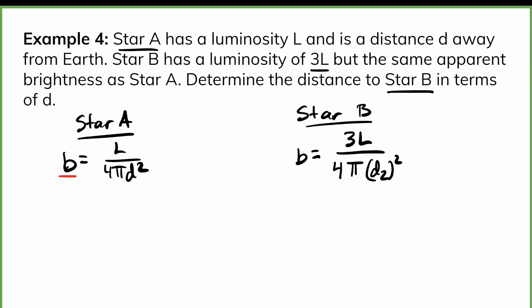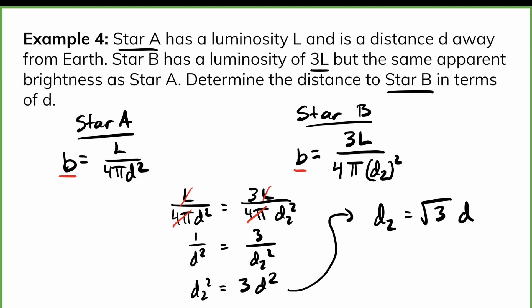But now what I want to do is I want to get D2 in terms of D. The one clue they gave me in the question is that the apparent brightnesses are the same. So actually I can equate these two different equations here. So I have L over 4 pi D squared, and that's equal to 3L over 4 pi D2 squared. What I can do is start dividing out things that are the same on both sides. So the terms for L will cancel out as well as the 4 pi's. So really what I'm left with is 1 over D squared is equal to 3 over D2 squared. And if I cross multiply here, I get D2 squared is equal to 3 D squared. And then I will take the square root of both sides. So I end up with D2 is equal to root 3 times D. And I can simplify that as a decimal if I wanted. So I can say the distance to the second star is equal to 1.7 D.